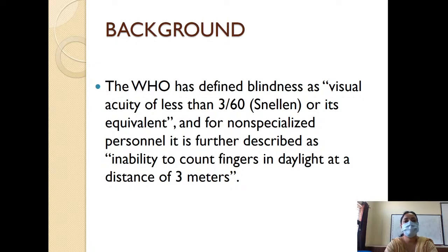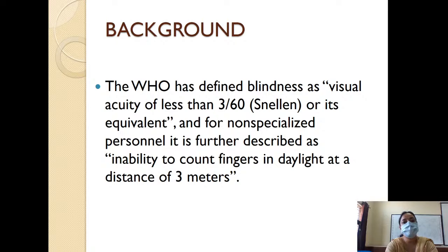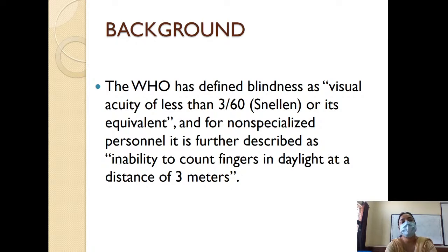The program also remains unchanged after so many years. First, you have to begin with the definition of blindness, where WHO has defined blindness as visual acuity of less than 3/60 measured through Snellen's chart or its equivalent. For non-specialized personnel, it is further described as inability to count fingers in daylight at a distance of 3 meters.